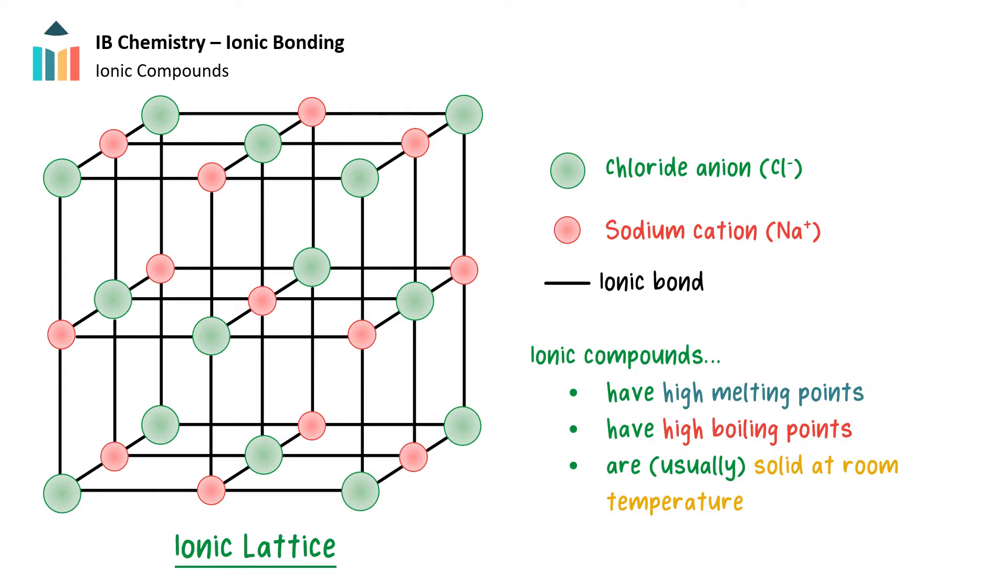Because of the strong electrostatic attraction between the cation and the anion, the energy required to break the ionic bond is quite high. Therefore, ionic compounds tend to have high melting and boiling points. Consequently, ionic compounds are usually found in the solid state at room temperature.